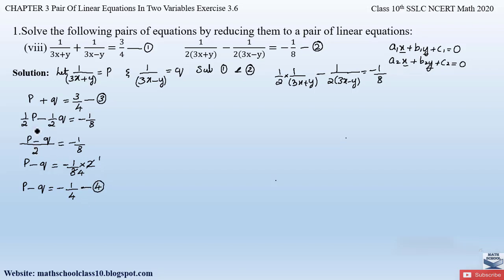Taking the denominator common and sending it to the right-hand side gives us equations 3 and 4 in the simplest form. We can observe that equations 3 and 4 have been reduced to the general form of a pair of linear equations, where variables p and q are both in the numerator.